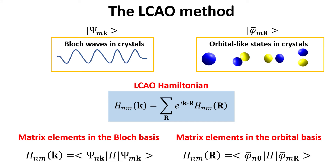Once all lattice vectors and the associated Hamiltonian matrix elements in the localized orbital basis are given, the Hamiltonian matrix in the Bloch basis for each crystal momentum k can be calculated. The eigenvalues will give us a set of energies for each momentum k, while the associated eigenvectors hold information about the orbital content of the corresponding state. In the following, we will describe a practical method to obtain the Hamiltonian matrix elements in the orbital basis.